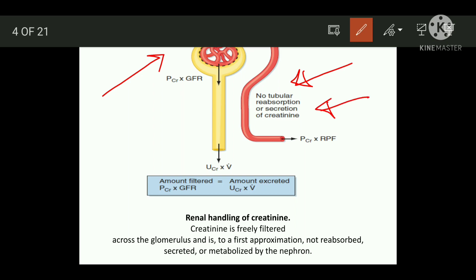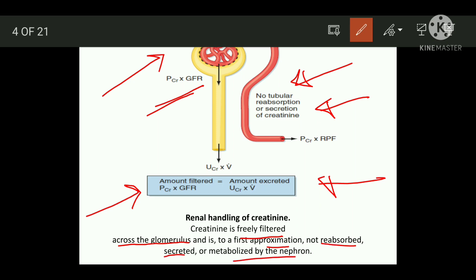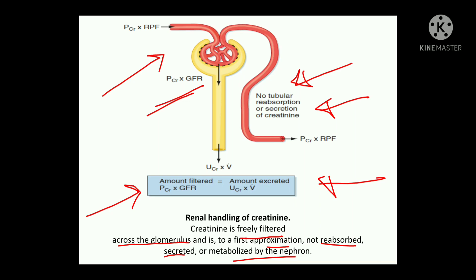There should be no tubular reabsorption or secretion of creatinine — this is the most important point. The amount which is filtered here is equal to the amount which is excreted. This clearly shows the renal handling of creatinine. Creatinine is freely filtered, which allows us to recognize the functioning of the nephrons. To a first approximation, creatinine is freely filtered across the glomerulus and is neither reabsorbed, secreted, nor metabolized by the nephrons.